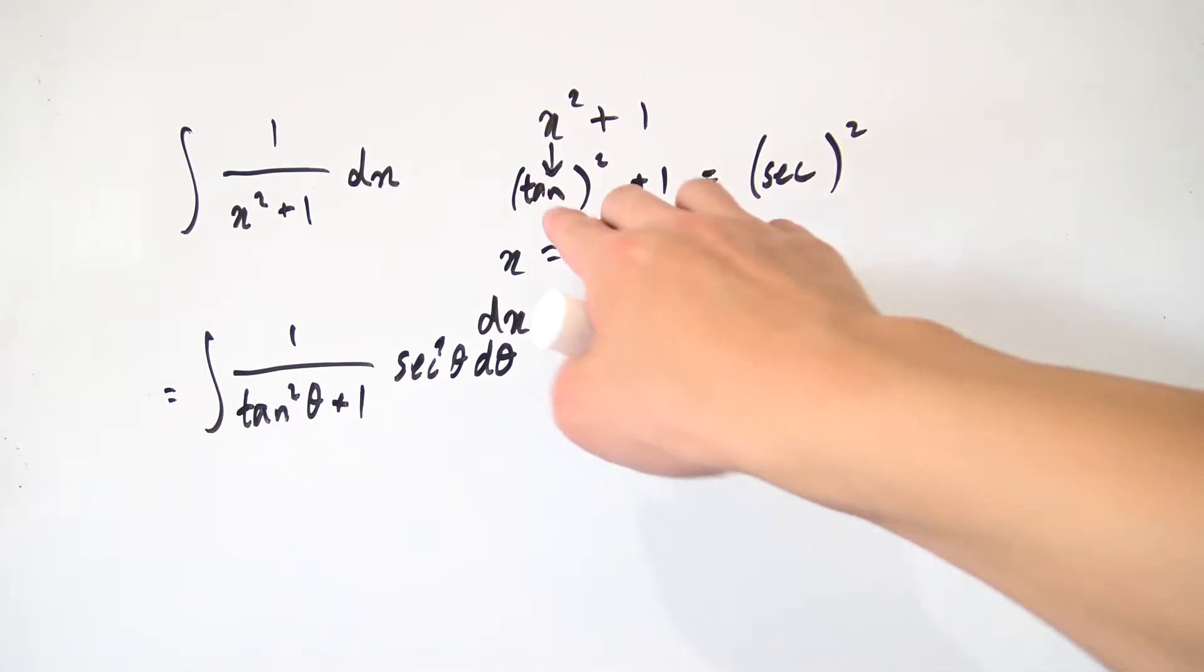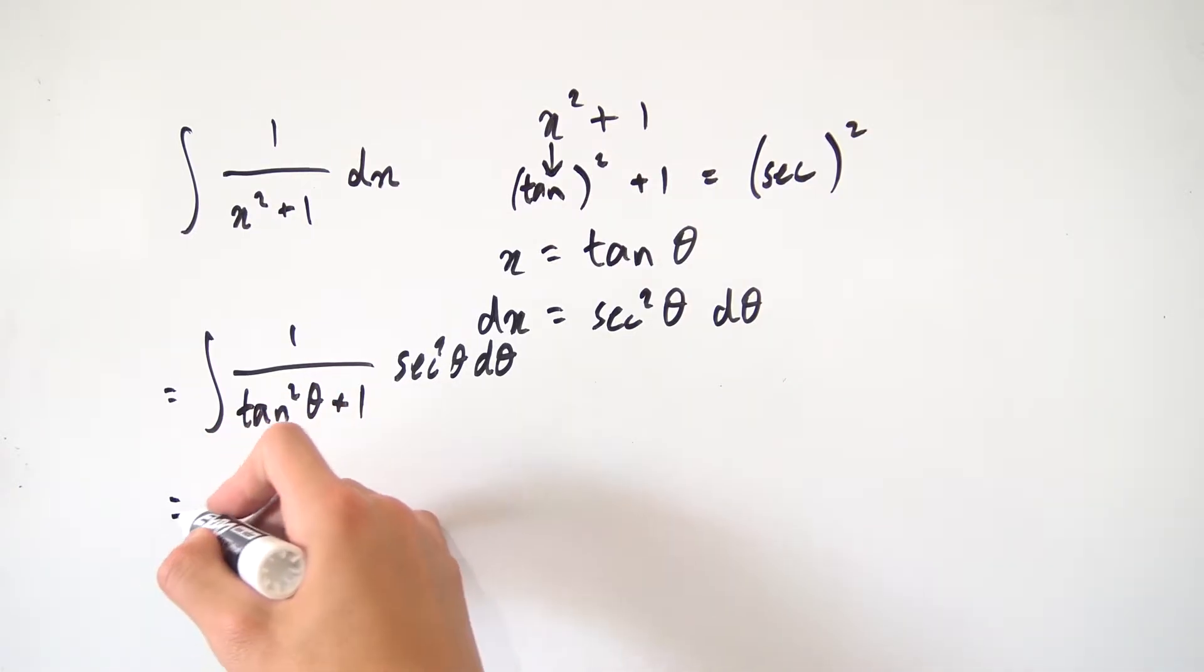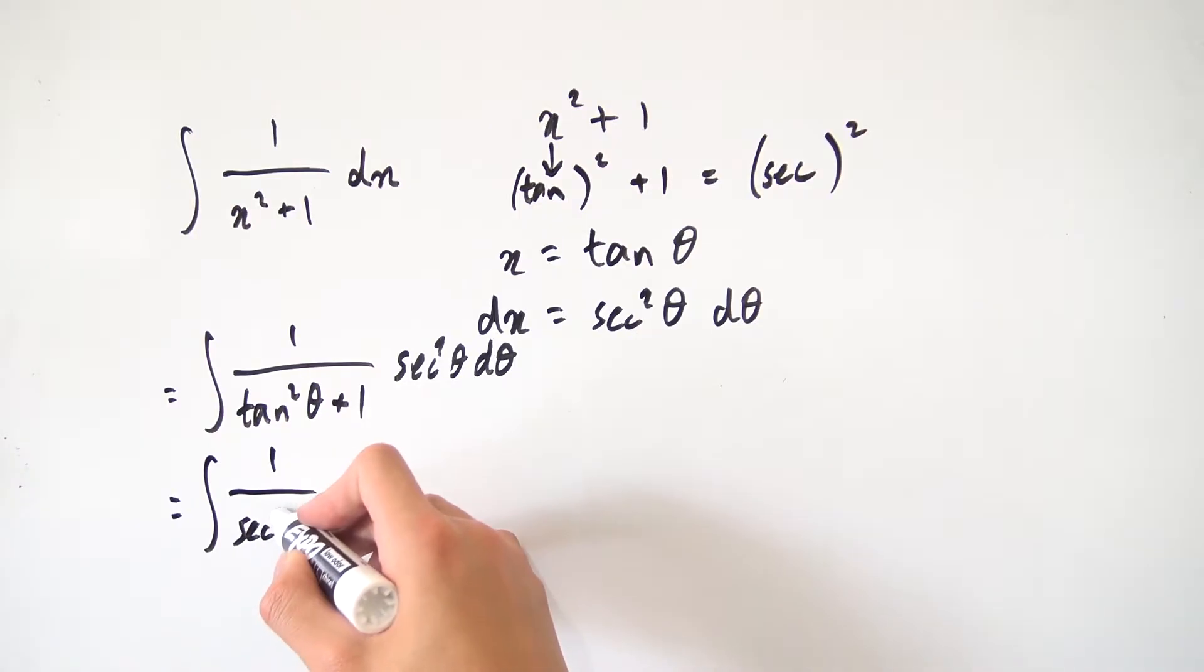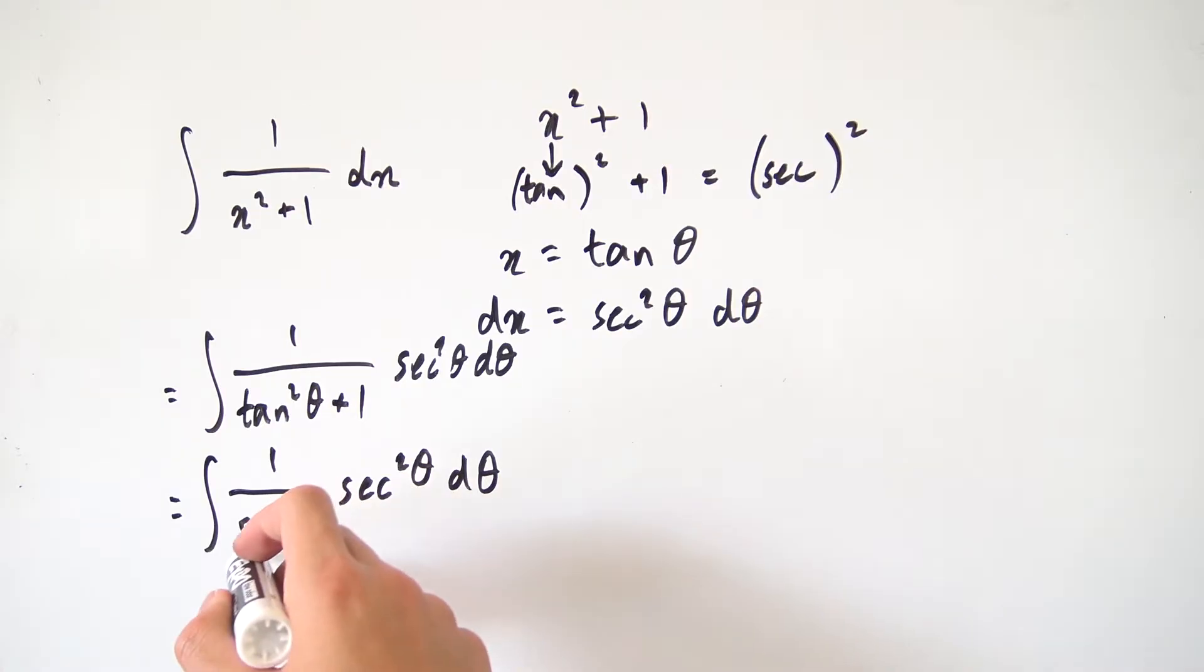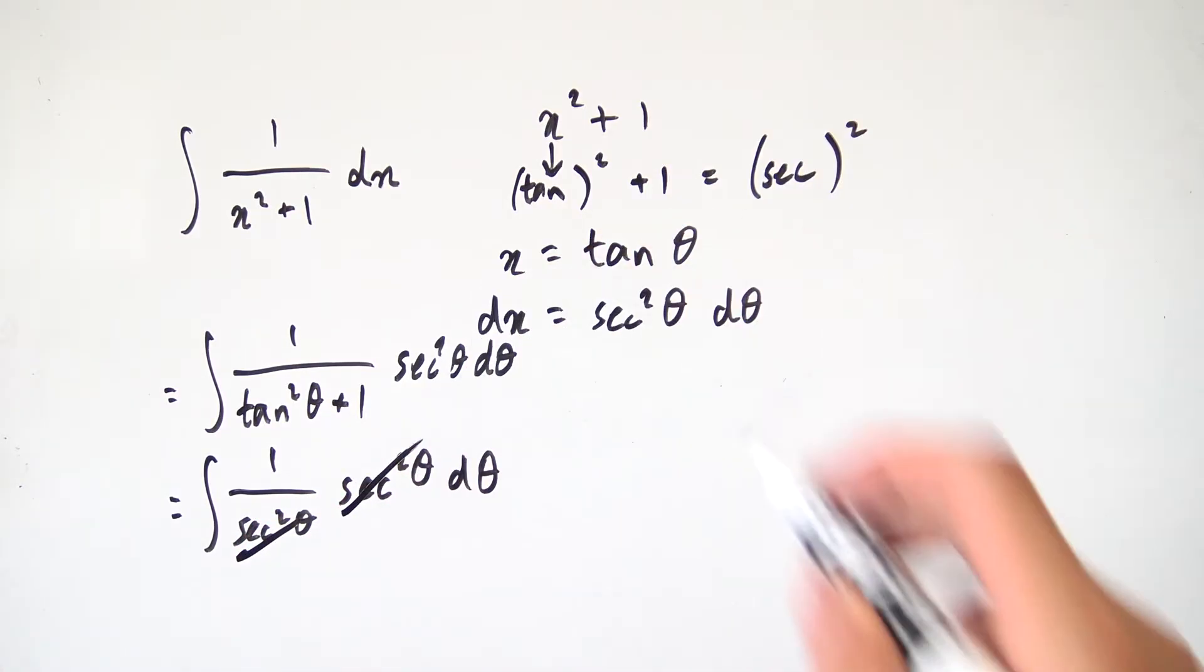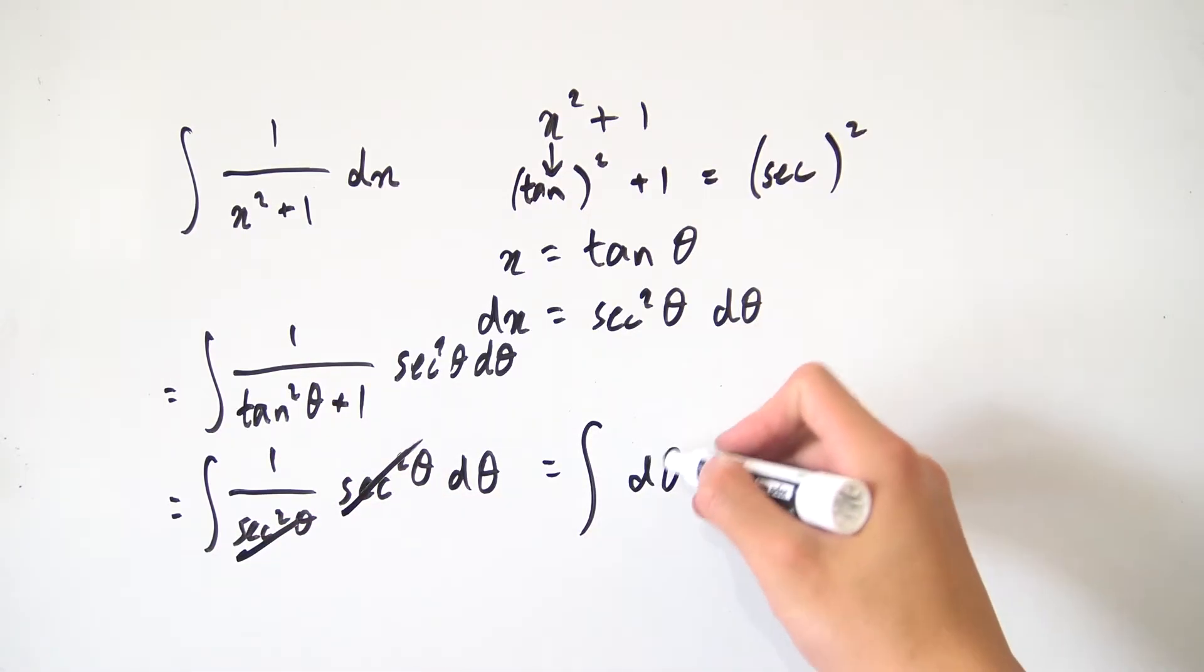And just like we said before, we have tangent squared of theta plus 1 turning into secant squared of theta. So that's the reason why we did that substitution so that this part right here can simplify down a little bit. So now we have the integral of 1 over secant squared of theta times the secant squared of theta d theta. And the really nice thing is right here, we have secant squared theta on the bottom and another one on the top. So this thing will cancel out with this thing right here. And all we're really left with in this integral is just our 1. So we just have the integral of d theta.